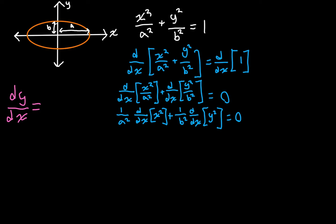The derivative of x squared with respect to x is 2x. For the y squared term, we use the chain rule, treating y as a function of x. The idea is that y is expressed in terms of x somehow, so there is a dy/dx. We take the derivative of the outer function — modeled by x squared — with respect to the inner value, which is y.